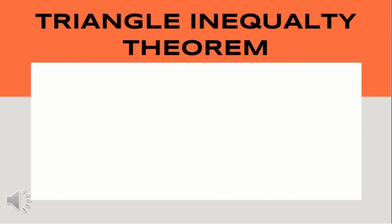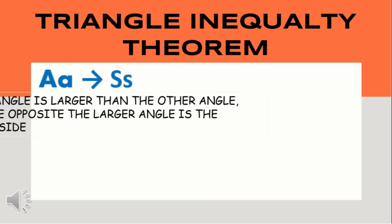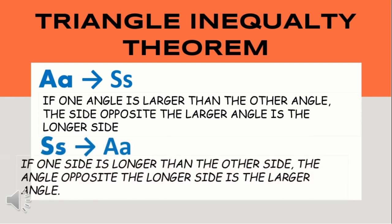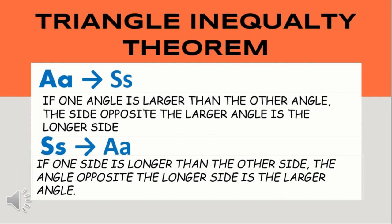Another triangle inequality theorems are: AA implies SS — it states that if one angle is larger than the other angle, the side opposite the larger angle is the longer side. And SS implies AA — it states that if one side is longer than the other side, the angle opposite the longer side is the larger angle.